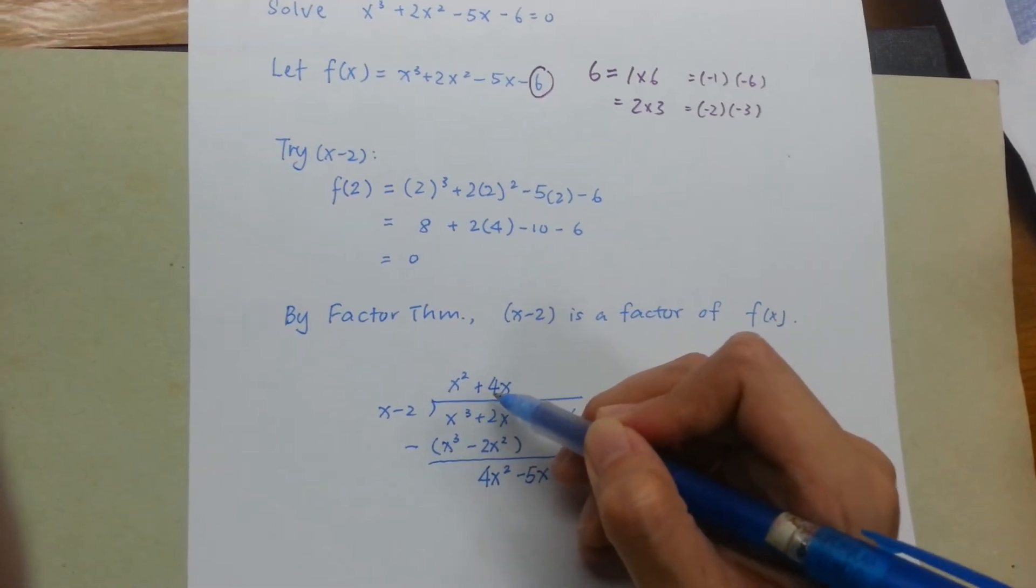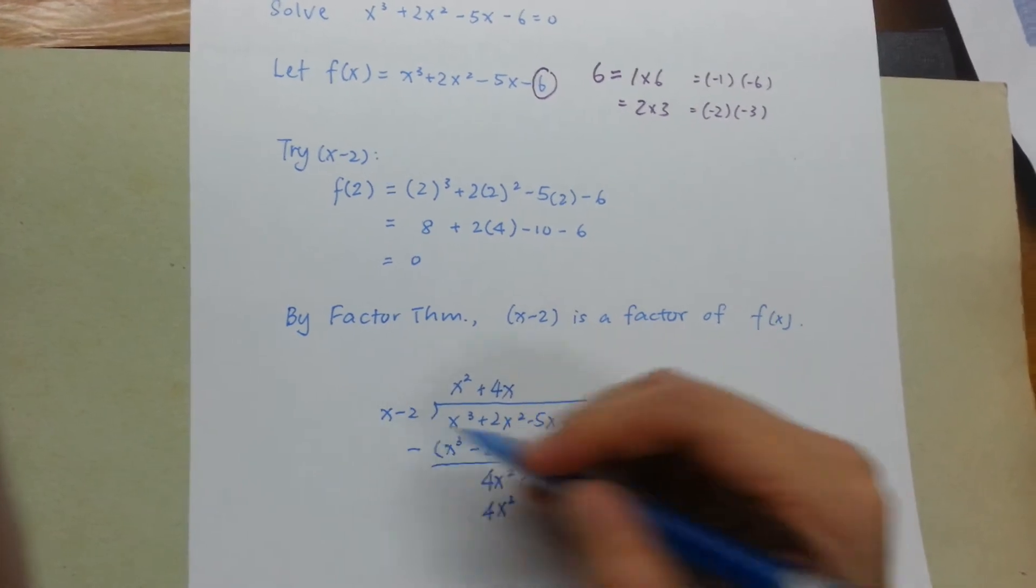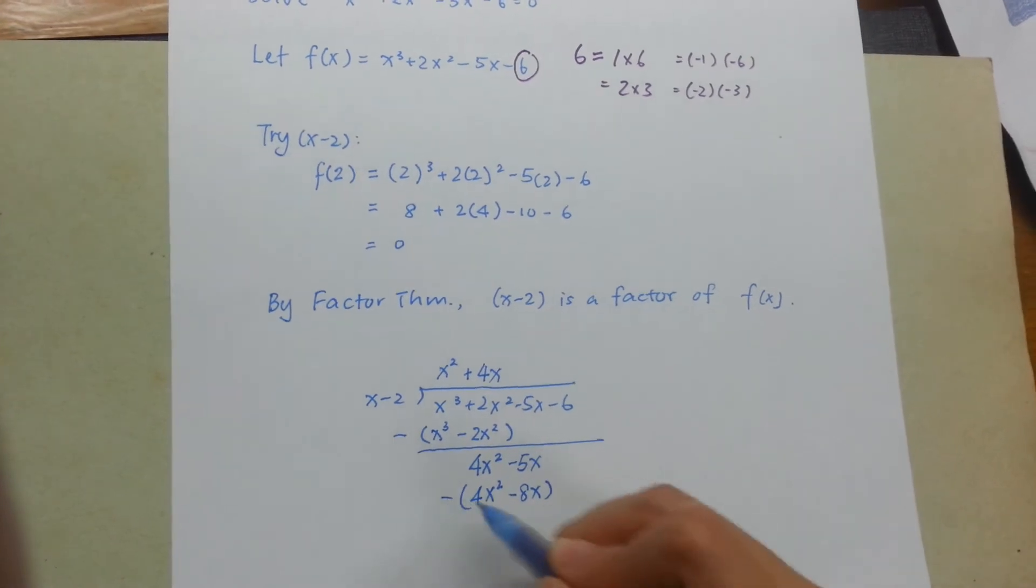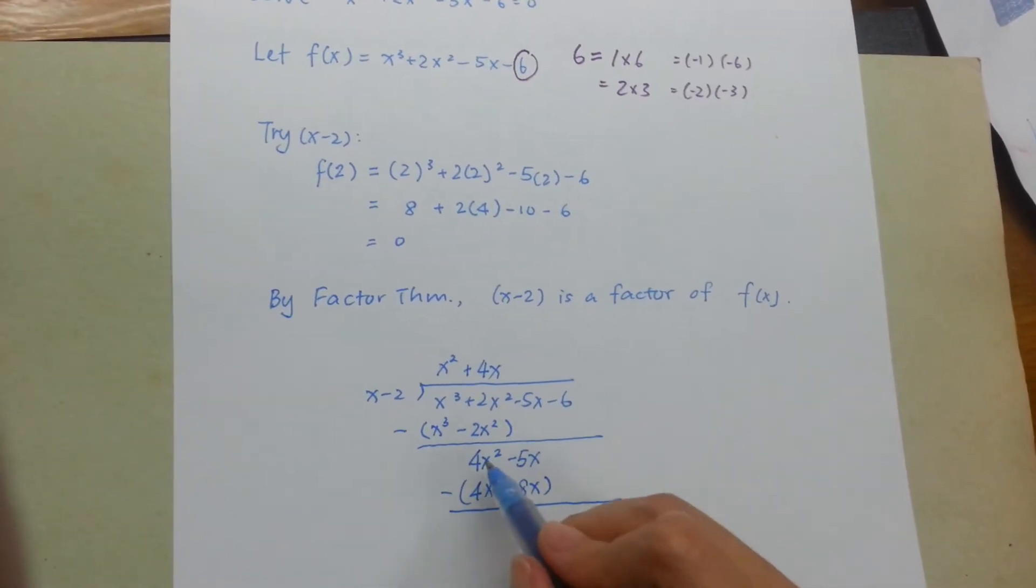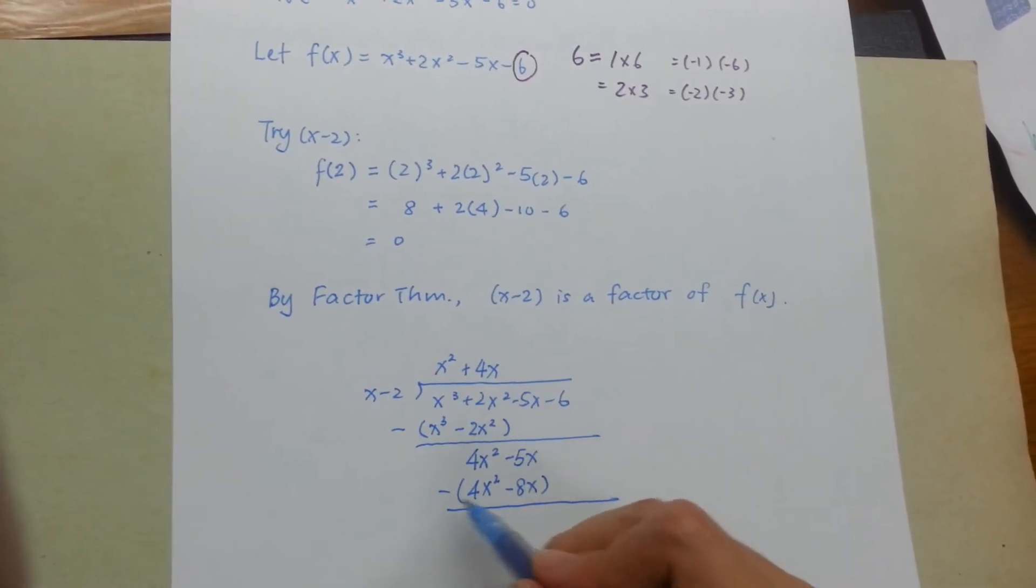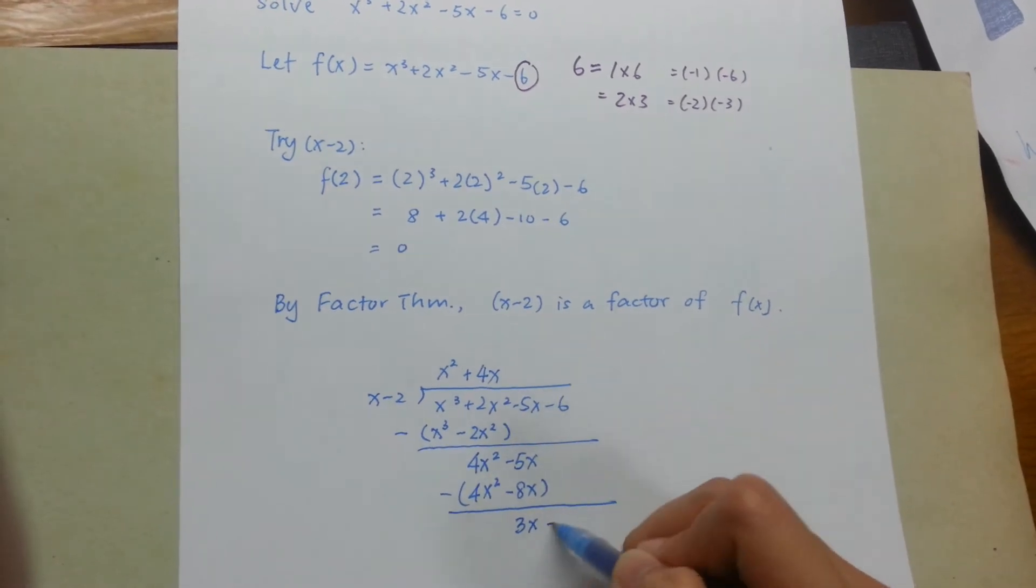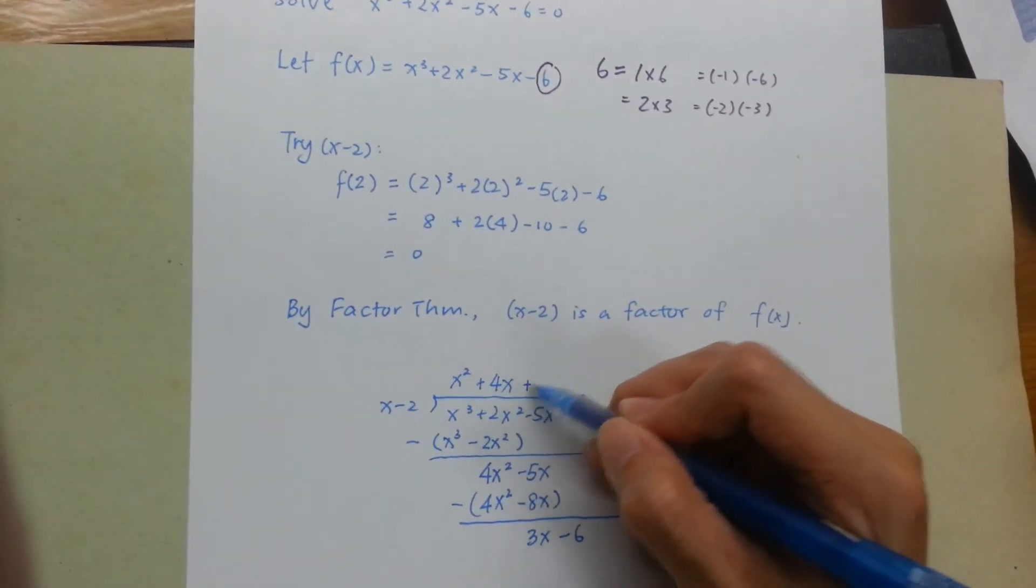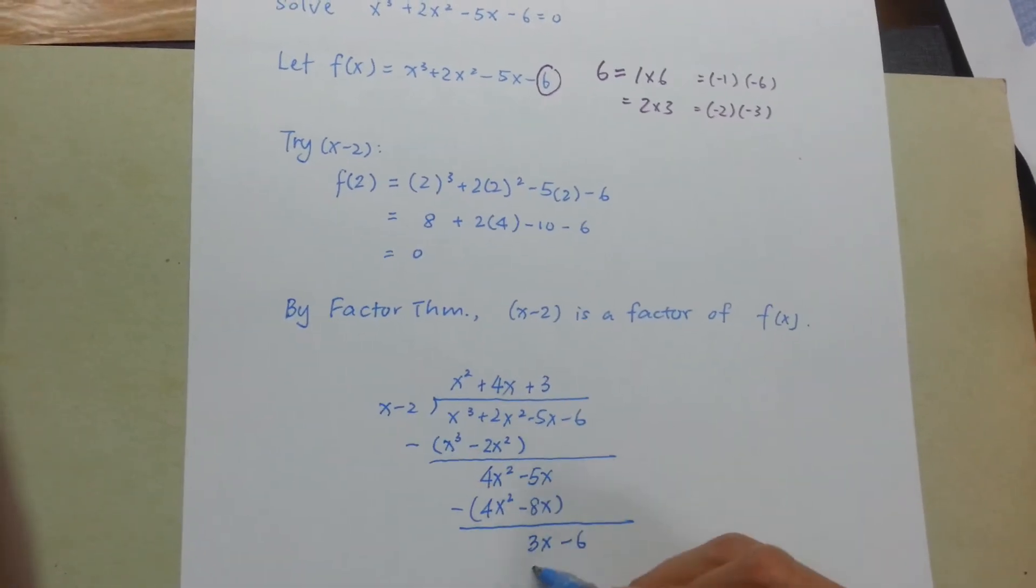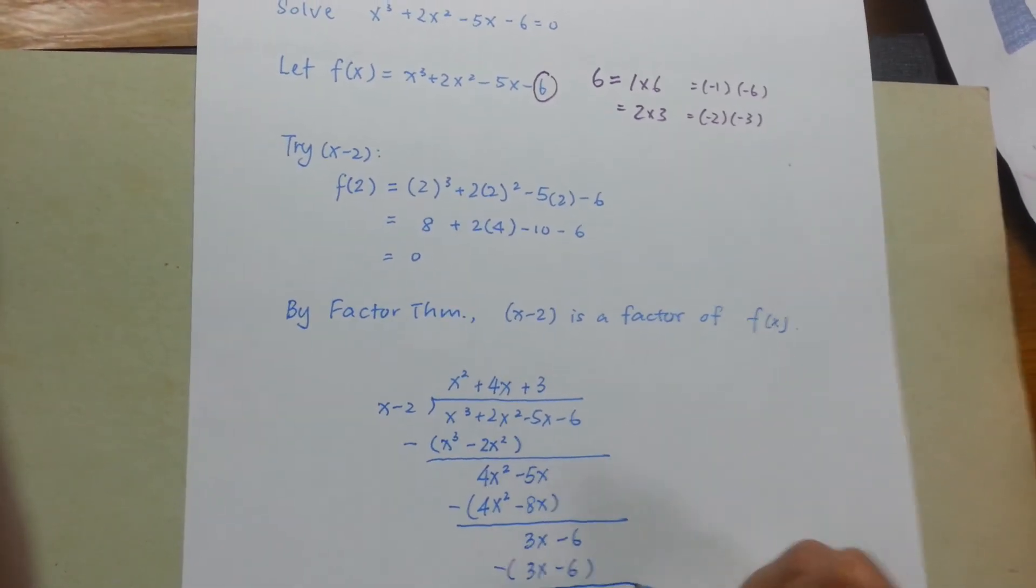Now I bring down this -5x and continue to do my division. 4x² divided by x-2, I will need 4x. So 4x times x is 4x², 4x times -2 is -8x. Again, we put that in a bracket and subtract. I will get 0.